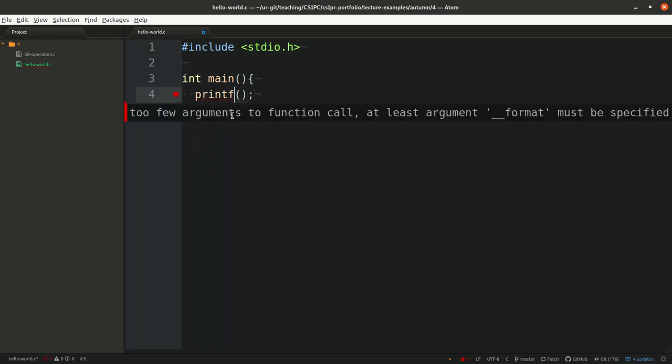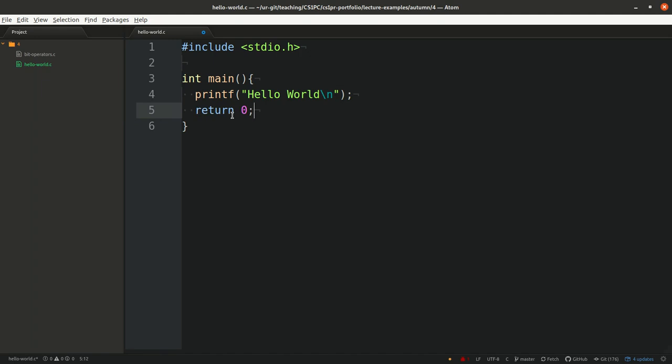So here we call what we later learn is a function printf. So print something in a format. And our format is we want to just say hello world. So we just want to print hello world. And I add backslash n because that is a new line character as you have seen in the ASCII table. Next, I say to return zero.